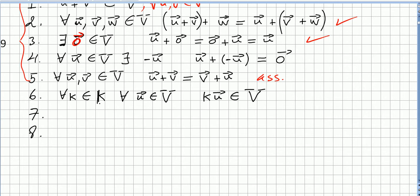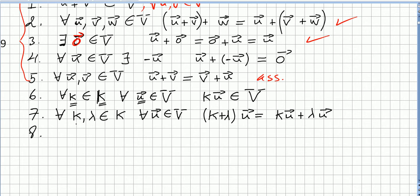Now we begin with the scalars. Axiom six: for any scalar k in the field of scalars and any vector u in the vector space, the product k times u should be in the vector space — so the product of a scalar by a vector is closed in the vector space. Axiom seven: for any scalars k and lambda in the scalar field and any vector u, k plus lambda times u is the same as k times u plus lambda times u — vectors are distributive with respect to scalar addition.